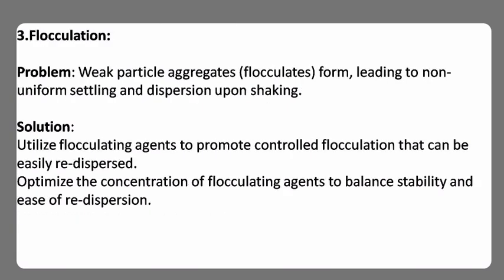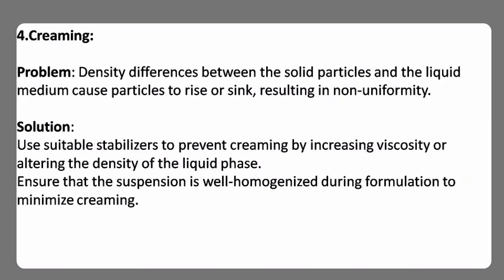Third, flocculation — weak particle aggregates (flocculates) form, leading to non-uniform settling and dispersion upon shaking. Solution: utilize flocculating agents to promote controlled flocculation that can be easily redispersed, and optimize the concentration of flocculating agents to balance stability and ease of redispersion. Fourth, creaming — density differences between the solid particles and the liquid medium cause particles to rise or sink, resulting in non-uniformity. Solution: use suitable stabilizers to prevent creaming by increasing viscosity or altering the density of the liquid phase, and ensure the suspension is well homogenized during formulation.